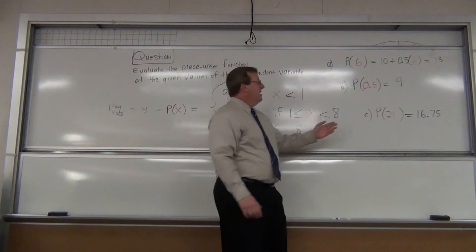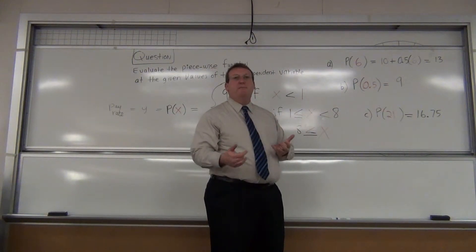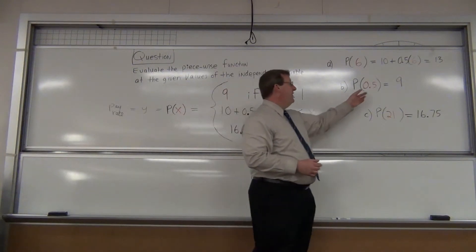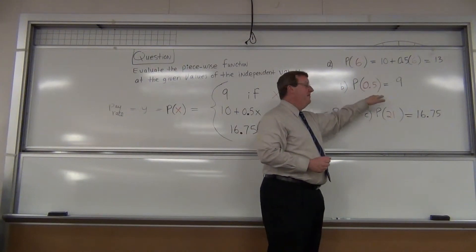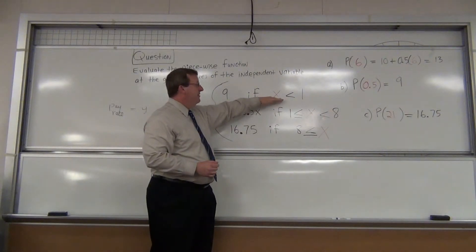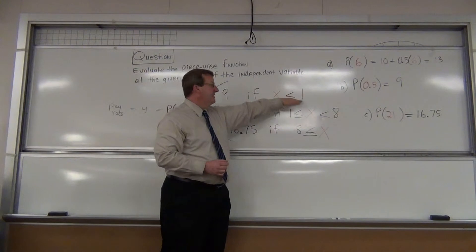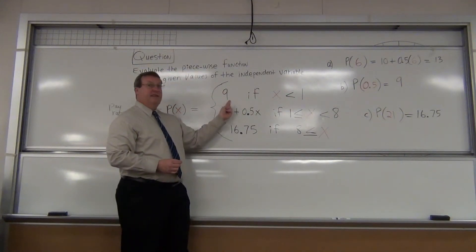Let's see what the next one is. Zero point five. We put the zero up there so you don't think it's some number five. The decimal sometimes can be overlooked. So zero point five means one half. What is the value of the function P evaluated at zero point five? Well, do the same process. Where does the input zero point five fit? Well zero point five clearly is less than one. So you plug it into this piece of the function wherever you see an X.